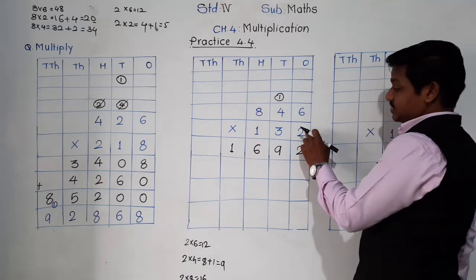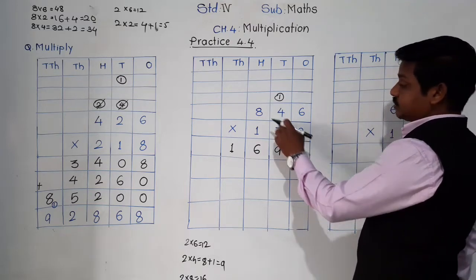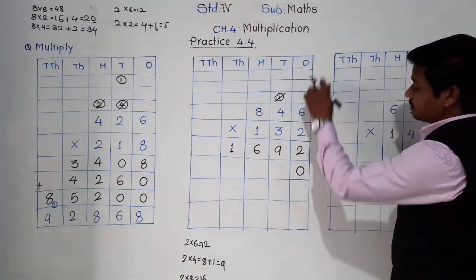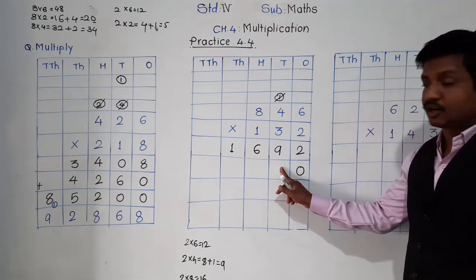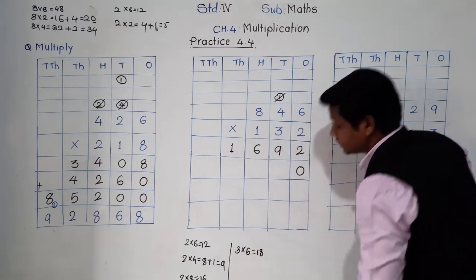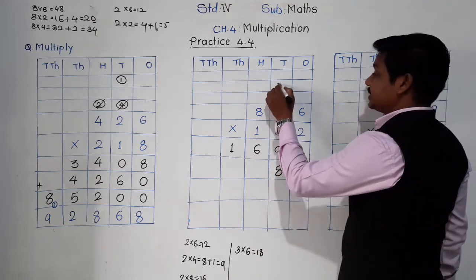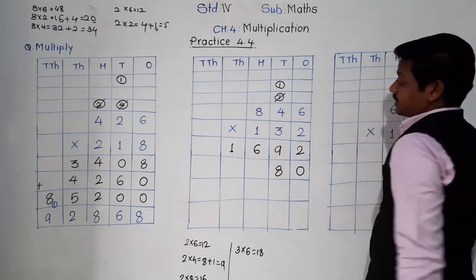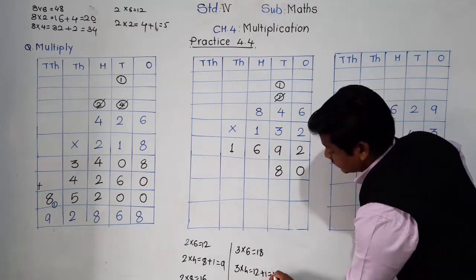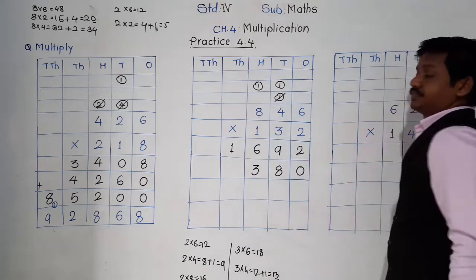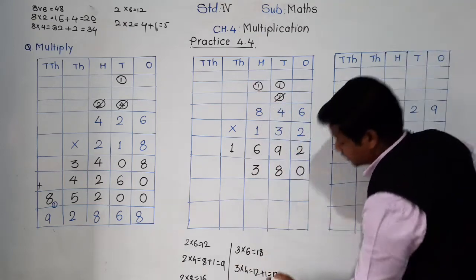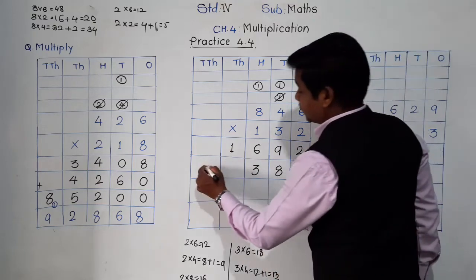This is the product of multiplication by the ones place digit. Now we are going to multiply by the tens place digit, which is 3. Cut the carry and put 0 in the ones place; the answer starts from the tens place. 3 sixes are 18: 8 comes here, 1 is carried to the tens place. 3 fours are 12 plus carry 1 is 13: 3 comes down, 1 carried to hundreds. 3 eights are 24 plus carry 1 is 25, written as it is.